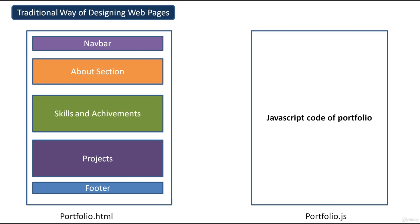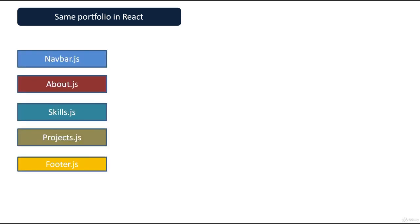Now we will see how to design this same portfolio webpage using ReactJS. Here you can see the same portfolio webpage in React. First, we design every section of the webpage as a separate component. There are five components: navbar.js, about.js, skills.js, projects.js, and footer.js. As discussed, in single-page applications everything is a component, and in ReactJS we create components to design webpages.